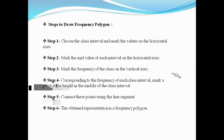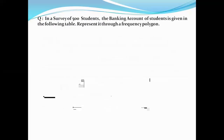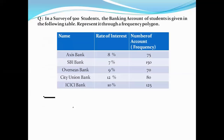The second topic is frequency distribution. Here are the steps to draw frequency polygons — these steps are already given in your textbook. Step one: choose the class interval and mark the values on the horizontal axis. Step two: mark the mid-value of each interval on the horizontal axis. Step three: mark the frequency of the class on the vertical axis. Step four: corresponding to the frequency of each class interval, mark a point at the height in the middle of the class interval. Step five: connect these points using line segments. The obtained representation is a frequency polygon. Let us discuss with one example — in a survey of 500 students, the banking account data of students is given in the following table; you have to represent it through the frequency polygon.